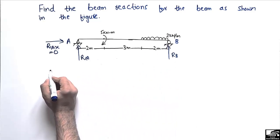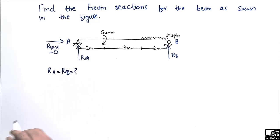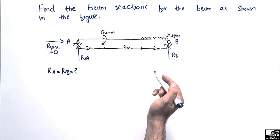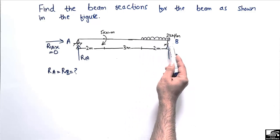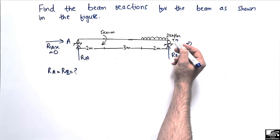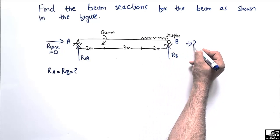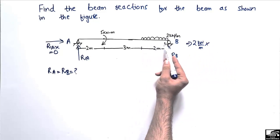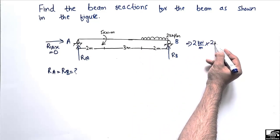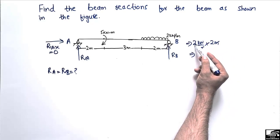So we simply have to find the vertical support reactions RA and RB — these are the two unknowns in our problem. First, we need to convert the uniformly distributed load to a concentrated point load to make it easier to solve. To do this, we multiply the distributed load by the distributed length: 2 kilonewton per meter multiplied by 2 meters.